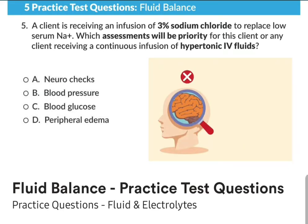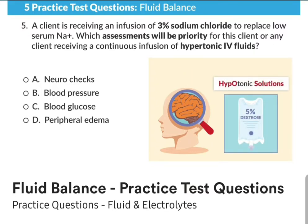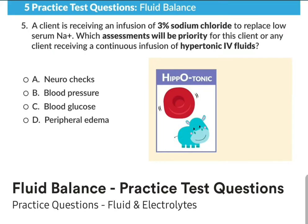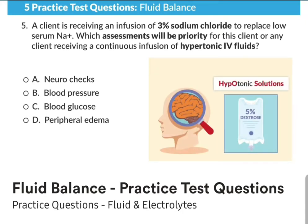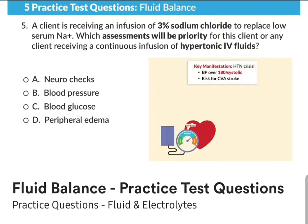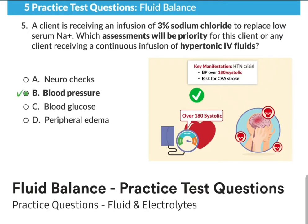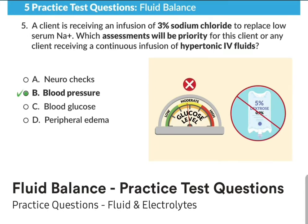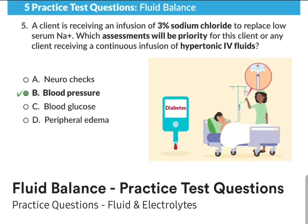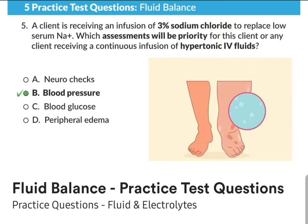Option A, neurochecks, would be correct only if it were hypotonic fluid, where cells puff up and swell the brain. But this question is about hypertonic. Option B, blood pressure, is the most correct — because what kills the client first is a CVA stroke from that hypertension crisis. Option C, blood glucose, is incorrect because this solution has no dextrose, so glucose would not be affected. Option D, peripheral edema, does not take priority over blood pressure here.